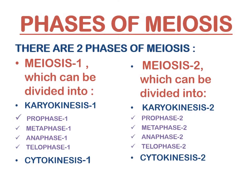There are mainly two phases of meiosis. Meiosis 1 can be further divided into karyokinesis 1 and cytokinesis 1, wherein karyokinesis 1 is divided into prophase 1, metaphase 1, anaphase 1, and telophase 1. Meiosis 2 can be divided into karyokinesis 2 and cytokinesis 2, where karyokinesis 2 is further divided into prophase 2, metaphase 2, anaphase 2, and telophase 2.